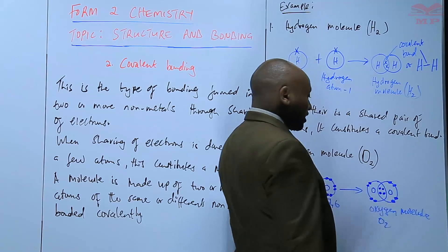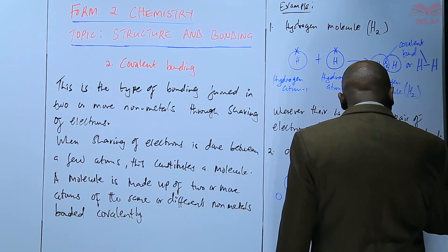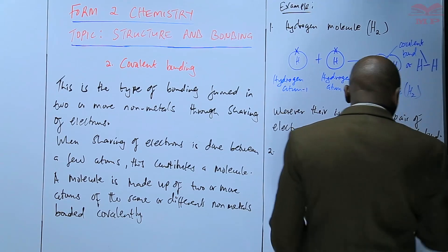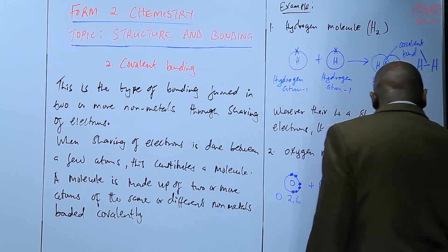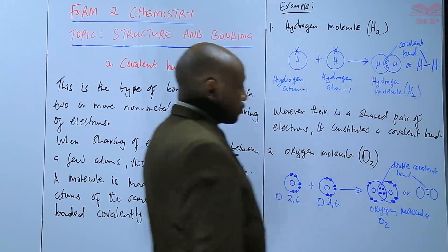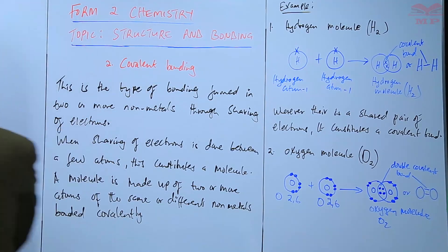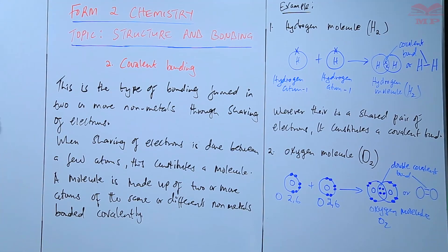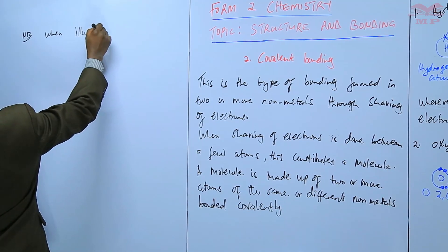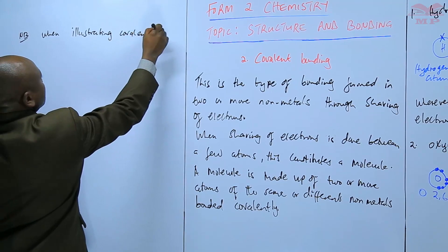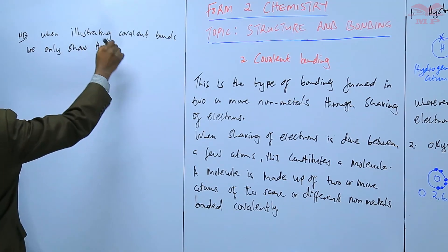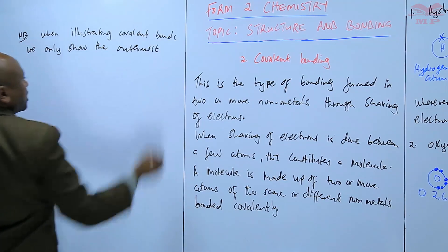There are two pairs of electrons shared between the oxygen atoms, so these are double covalent bonds. Every pair equals one bond, so two pairs give two covalent bonds — represented as O=O. A key point to note when illustrating covalent bonds: we only show the outermost electrons.